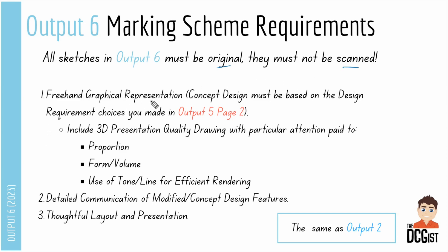You'll see that there's a freehand graphical representation required, and the concept design must be based on the design requirement choices that you made in output 5 page 2. So output 6 is really a progression of output 5, bringing the idea from your target market all the way towards your concept design. You need to include a 3D presentation quality drawing with particular attention paid to proportion, form and volume, and tone or line for effective rendering. You want one big 3D sketch with really good proportion, the form looks right when sketched, and effective rendering applied to that drawing.